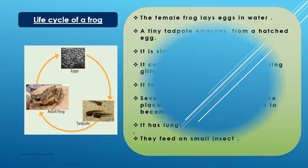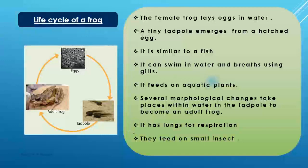Now we discuss about the life cycles of frogs. Look at this picture very carefully. There are three stages in the life cycle of frogs: eggs, tadpole, and adult frog. After a few days, eggs become tadpole, and after a few days, tadpole becomes adult frogs.